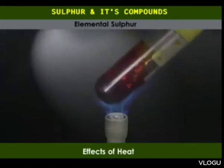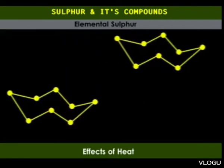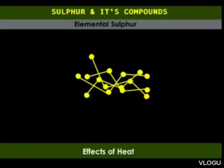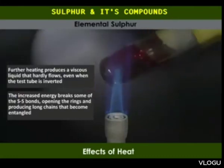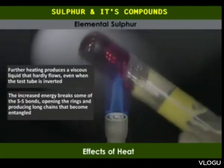This is because as heating continues, some of the covalent bonds break, leading to the formation of long chains of atoms. The chains get entangled, causing the liquid to become viscous and dark. In fact, at some point the test tube can be inverted without the sulfur pouring out.